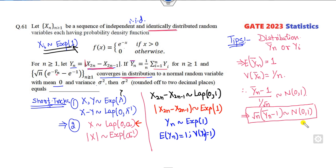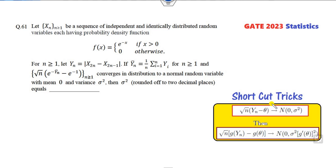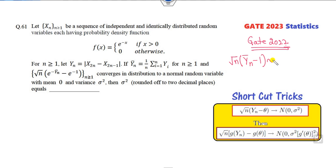Now once you are able to solve up to here, the rest of the target is very simple. You can correlate using this shortcut trick — the same shortcut tricks are also explained in GATE 2022 statistics, where a similar kind of question was asked. We have proven that √N(Y_N bar minus 1) follows Normal(0,1). So clearly theta is 1 and sigma squared is 1.